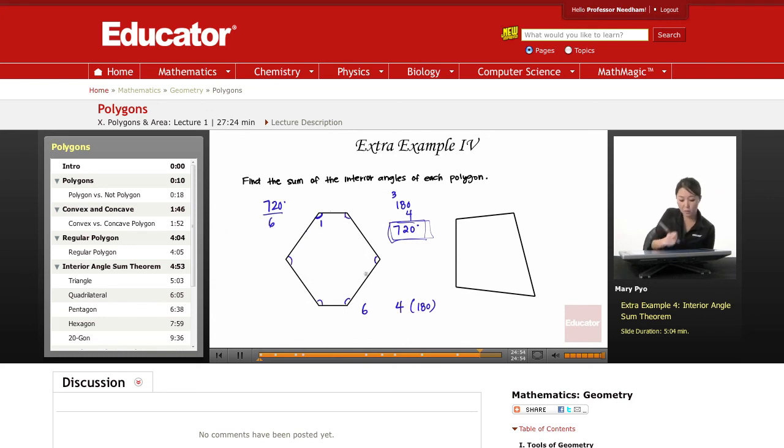Okay, so then here you do 720 divided by six—each of these angles is going to be 120 degrees, 120 here, 120 here, 120 here, here, here, here, here, okay.